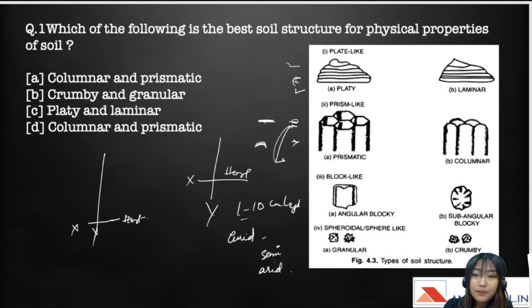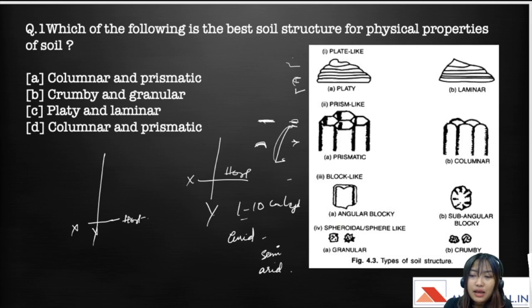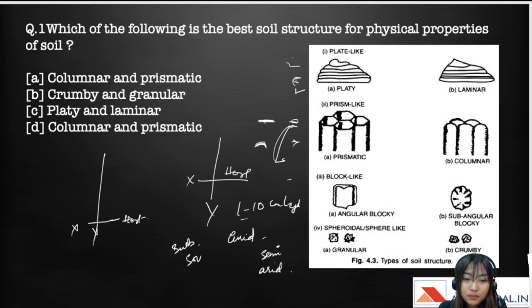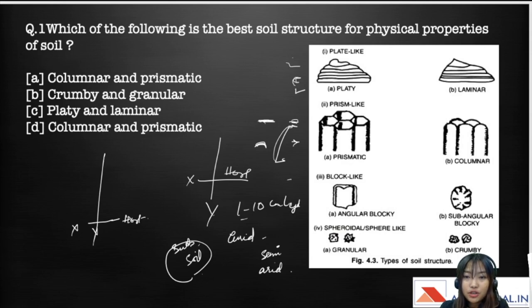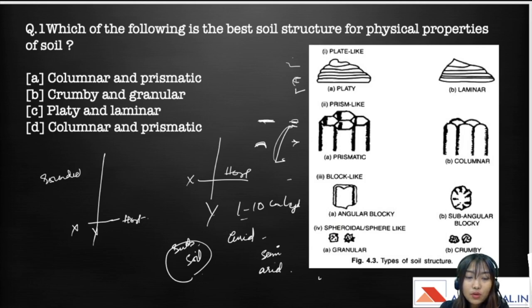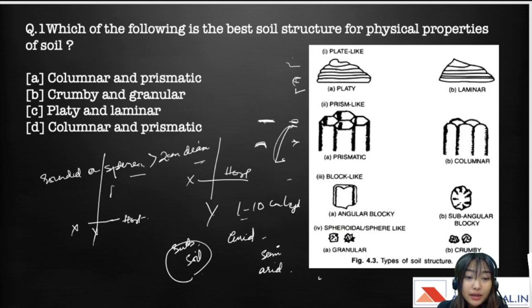Block-like structures can be divided into angular blocky or sub-angular blocky. In block-like structures the three dimensions are the same, and they are mostly confined to the subsoil. Their characteristics relate to soil drainage, soil aeration, and infiltration. The fourth type is spheroid or sphere-like, further divided into granular and crumby. The soil is usually rounded in shape, not more than 2 centimeters in diameter, and has high organic matter.